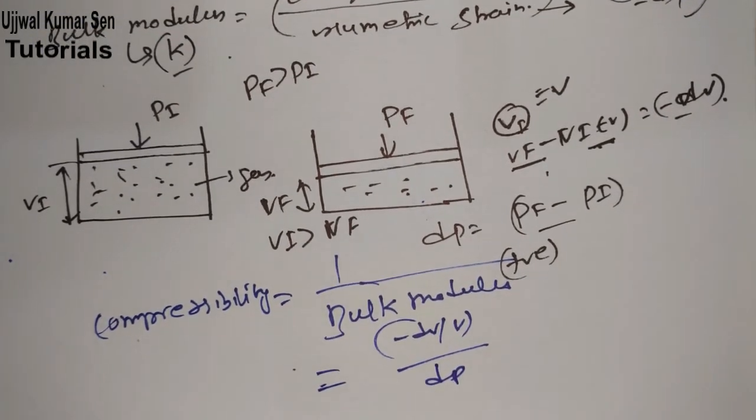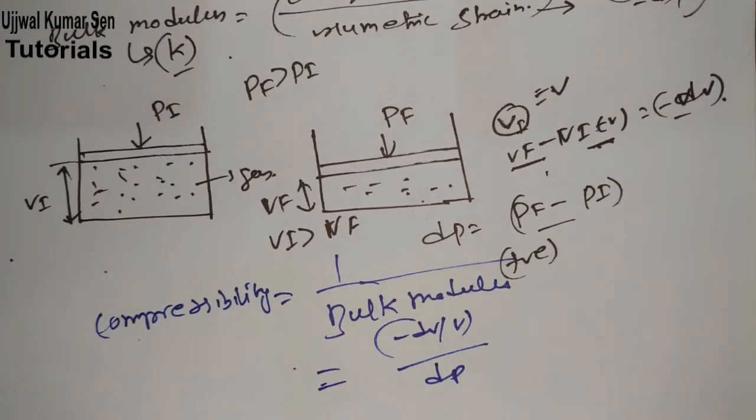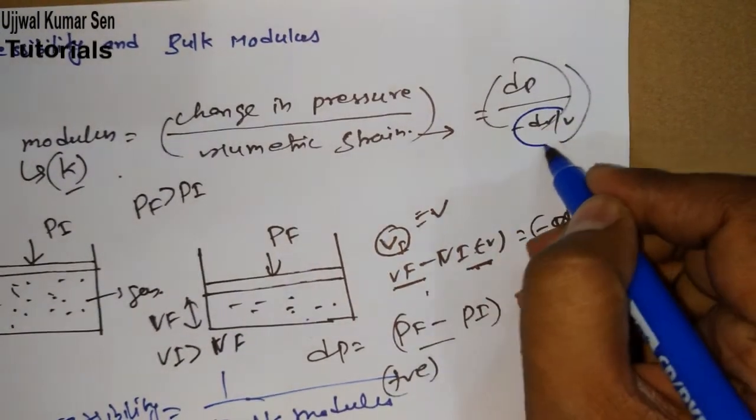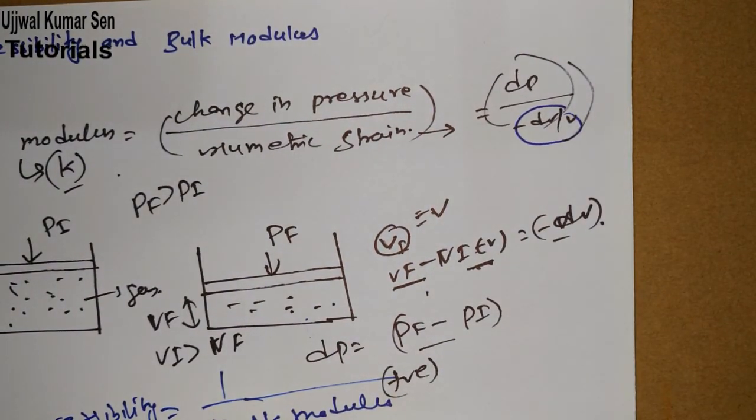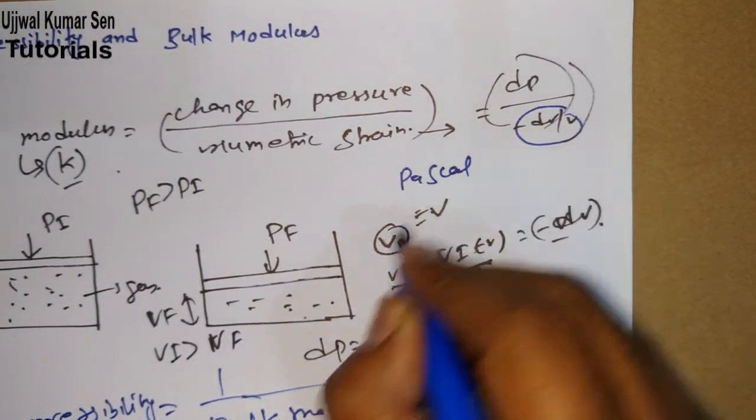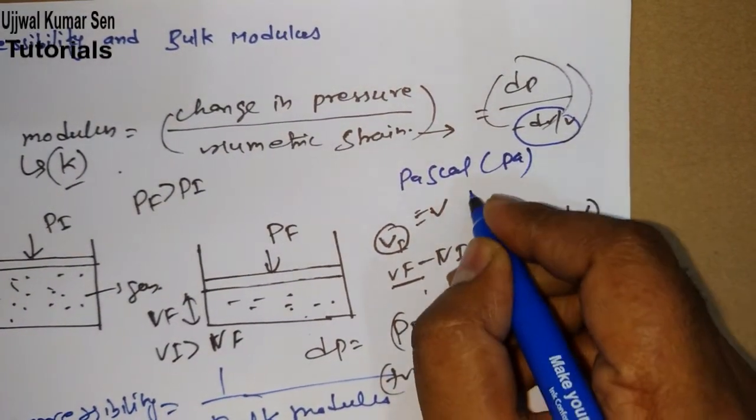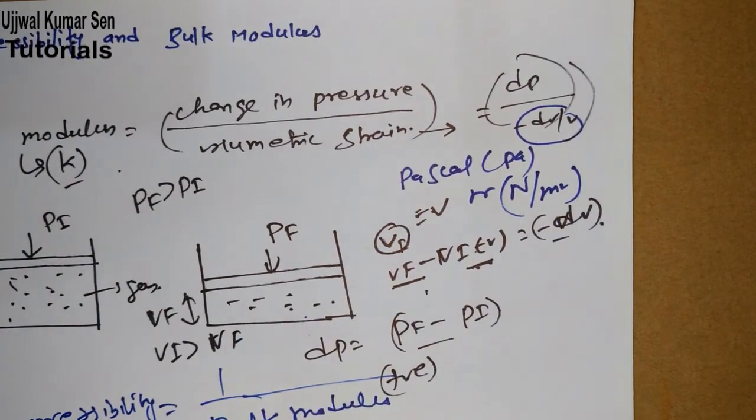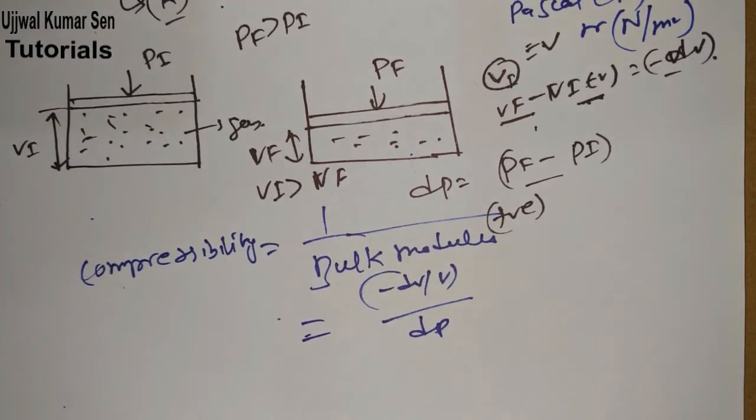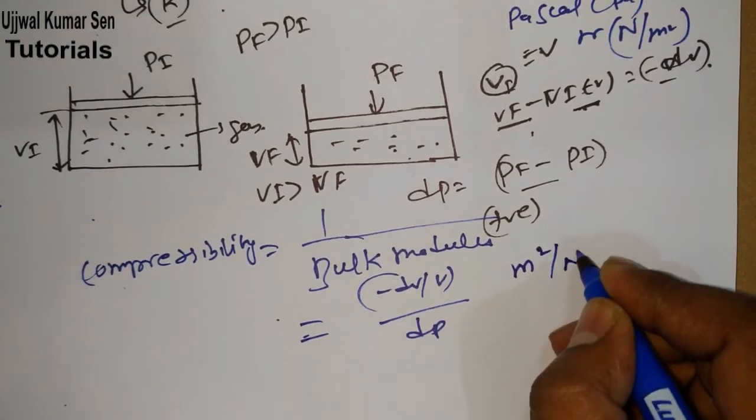Let's look at SI unit of bulk modulus. We know the formula dP upon dV upon V. Strain has no unit, no dimension. Pressure unit is Pascal, Pa, or Newton per meter square. Let's see the SI unit of compressibility. As it is a reciprocal of bulk modulus, its SI unit will be reciprocal of it, so it would be meter square upon Newton.